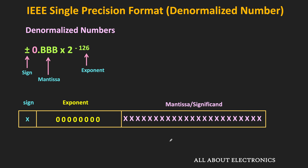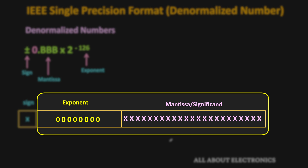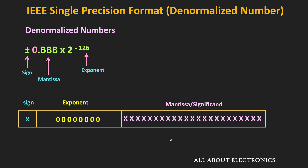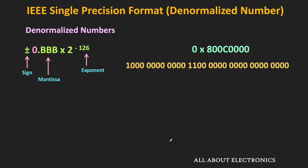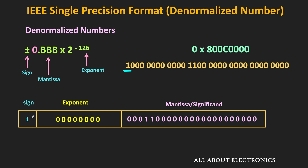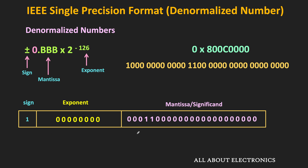If we are given any 32-bit number in single precision format, just by looking at the exponent and mantissa fields we can determine whether it is normalized or denormalized. For example, let's take a 32-bit number in single precision format given in hexadecimal form. Converting to binary: 8 corresponds to 1000, and C corresponds to 1100, giving us the full 32-bit binary number. In the 32-bit single precision format, the first bit is the sign bit — in this case equal to 1. The next 8 bits correspond to the exponent, and the next 23 bits correspond to the mantissa. Here, the exponent field is equal to 0 while the mantissa field is non-zero, indicating that the given number is a denormalized number.